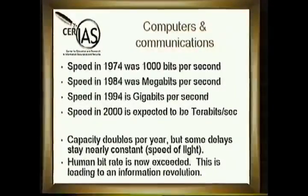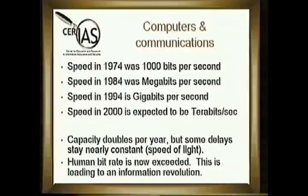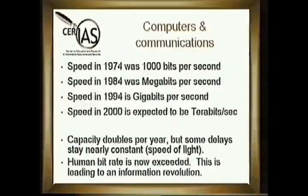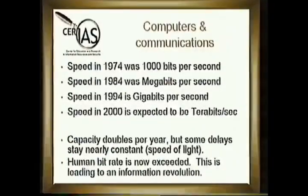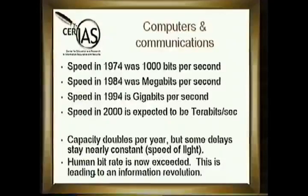There are constants that have stayed the same — one is the physical constant of the speed of light, which affects how long it takes for information to travel from one place to another. So although we can increase capacity, there is a limit on delay from site to site. Another constant is what we are capable of receiving and processing as human beings. The capacity of computers to collect, transmit, and display information is now faster than we as organic beings can take in and process — we have exceeded the human bit rate.